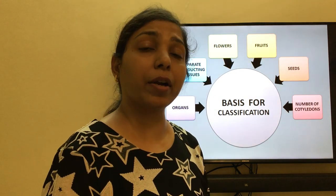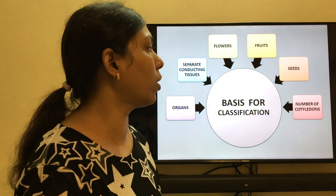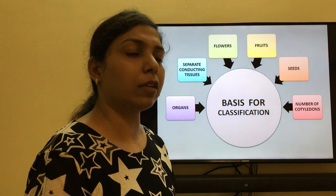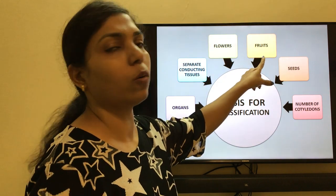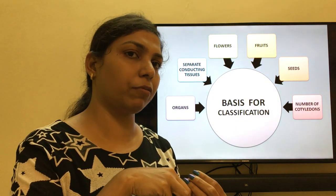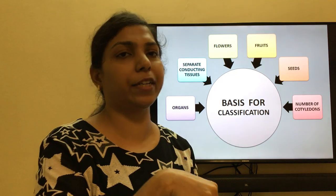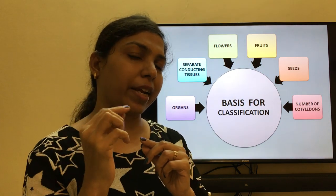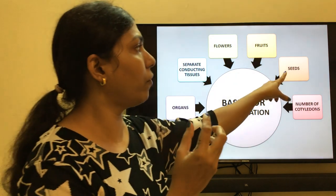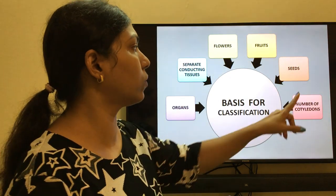The third property is flowers — is the plant producing flowers, or is it a non-flowering plant? The fourth is fruits — if flowers are produced, is the plant able to produce fruits, or does it only give flowers and no fruits? The fifth property is seeds. If you look at the seeds, are they present inside the fruit or outside the fruit? For example, your mango has a big seed present inside the fruit, but a strawberry has those tiny seeds present on the outside of the fruit.